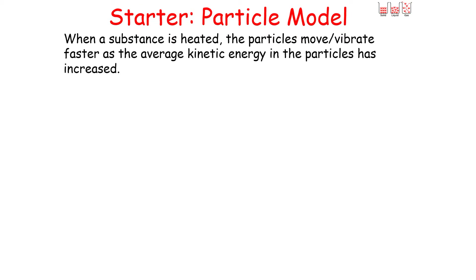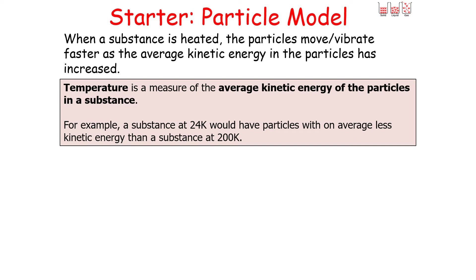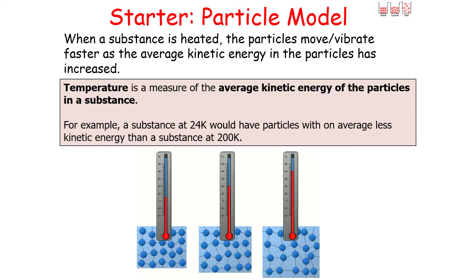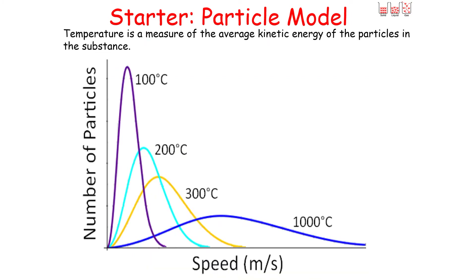When a substance is heated, the particles will move or vibrate faster as the average kinetic energy of the particles has increased. So we can say that temperature is a measure of the average kinetic energy of the particles in a substance. For example, a substance at 24 degrees Kelvin would have particles with less average kinetic energy than a substance at 200 degrees Kelvin. As shown in the following graph, we can look at how the temperature of a gas links to the average kinetic energy or speed of the particles in that substance.